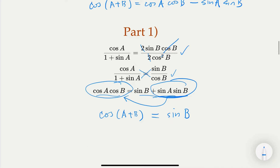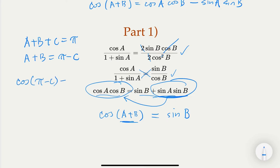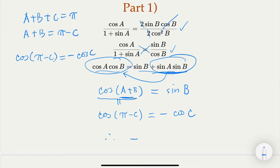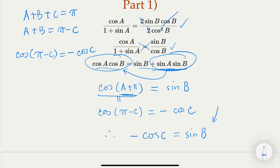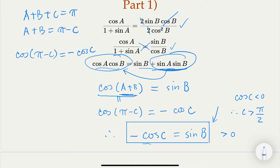Since A + B + C = π, we have A + B = π - C. Using the identity cos(π - C) = -cos C, we get cos(A + B) = -cos C. Therefore -cos C = sin B. Since sine is always positive in a triangle, cos C must be negative, which means C > π/2.